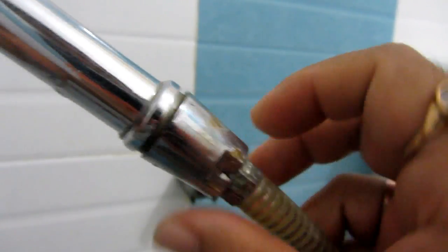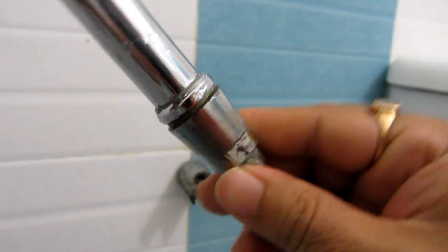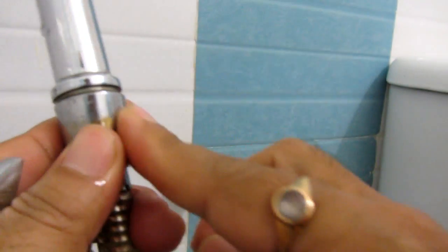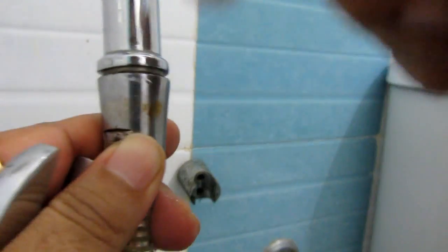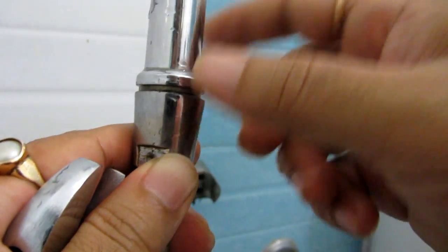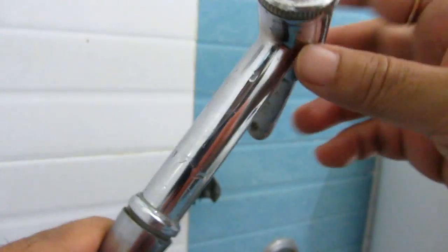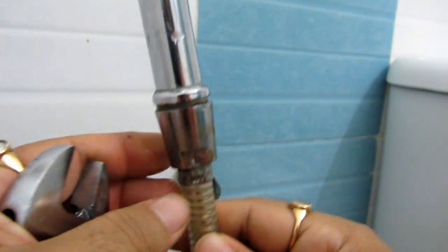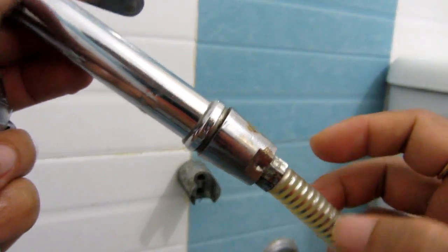Everything is fixed. So this is how you can fix your faucet which is leaking or dripping. Like I said again, in case there's a washer which needs to be changed inside, you'll have to change that accordingly as and when required.